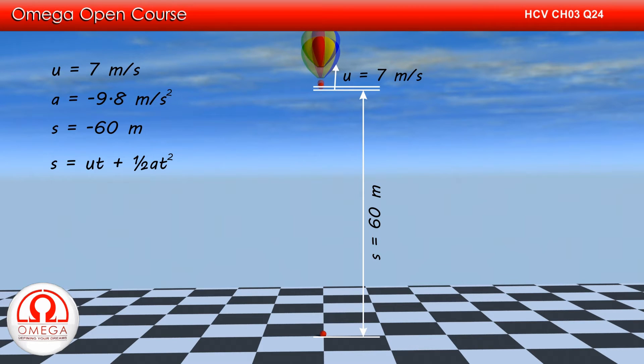From the second equation of Newton's equations of motion, we have s equals ut plus half at squared. Putting the values, we get minus 60 equals 7t minus 4.9t squared.